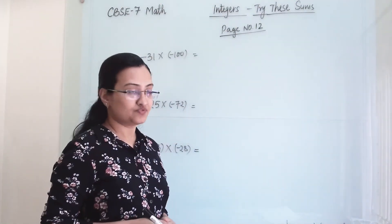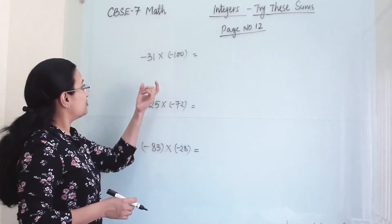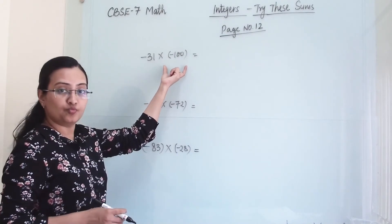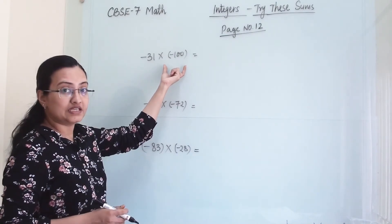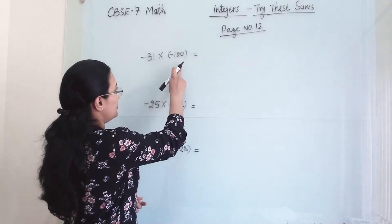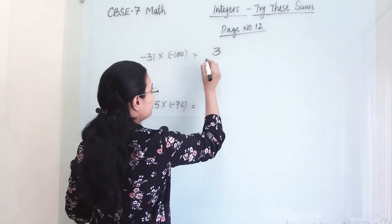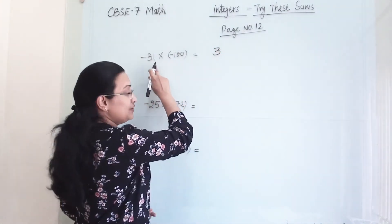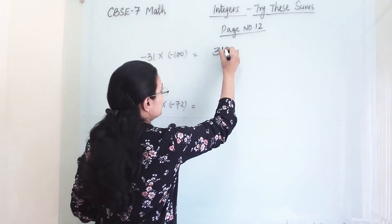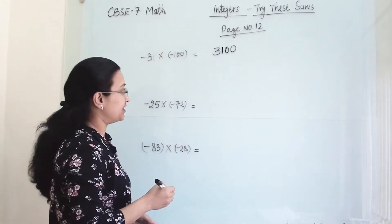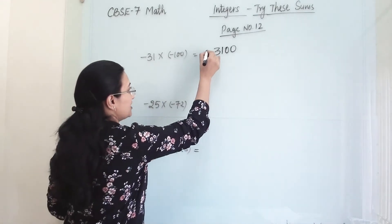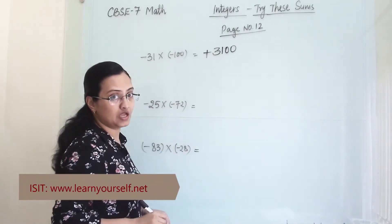Our next set of sums from page number 12: (-31) × (-100). First we multiply 31 × 100, which gives 3100. Then minus × minus becomes plus, so our answer will be positive: +3100.